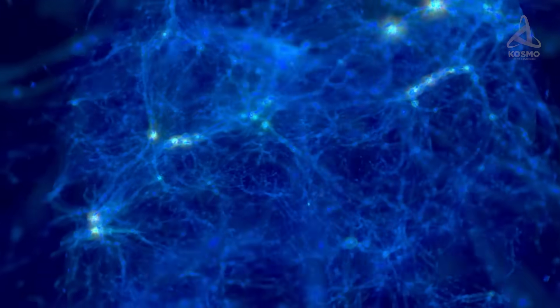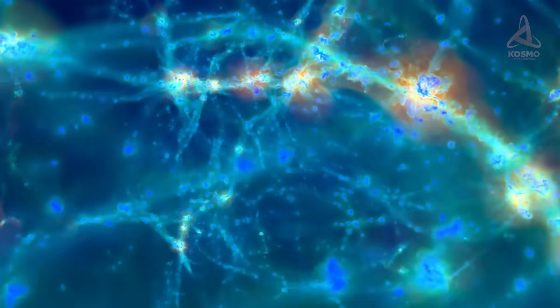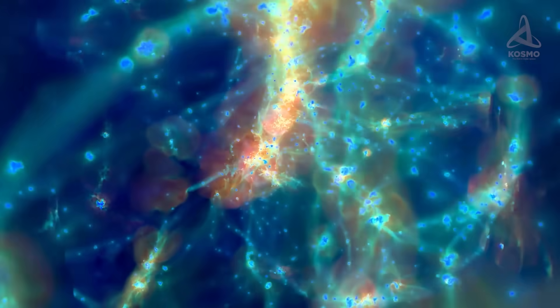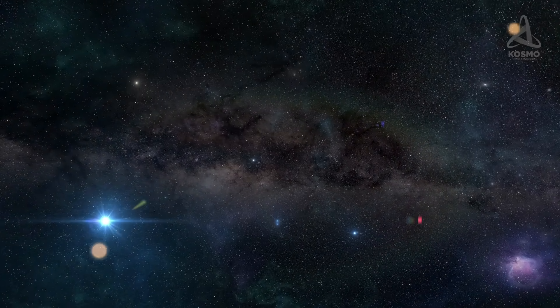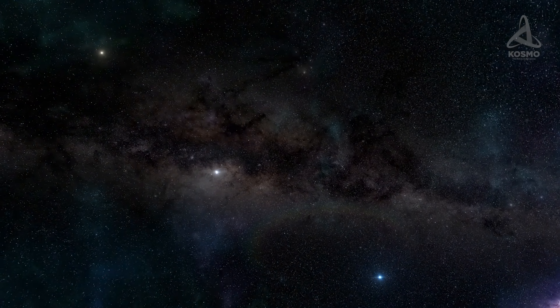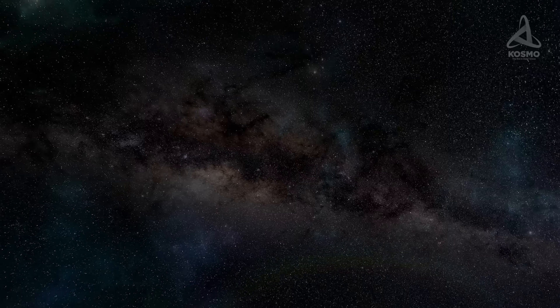Moving on, galaxies group together to form clusters and superclusters. These, in their turn, form galactic filaments. These filaments, distributed all over the Universe, are interspersed with mysterious areas of almost total emptiness: voids.